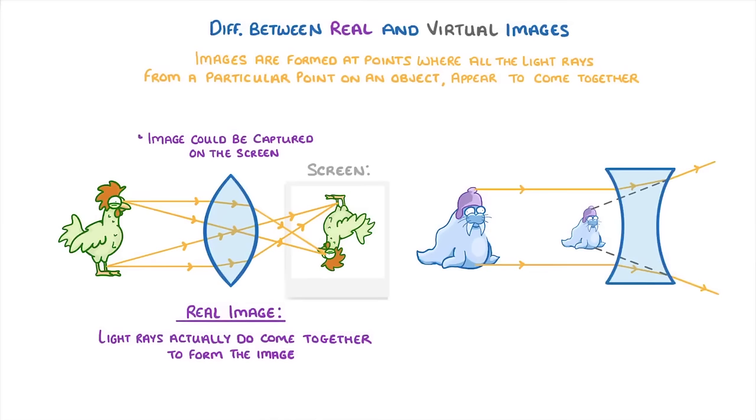If we look at this diagram instead, though, we're seeing a virtual image. Virtual images are formed when the light rays don't actually come together where the image appears to be.